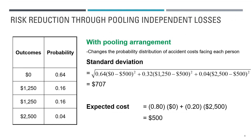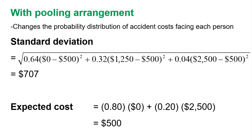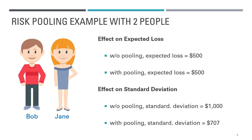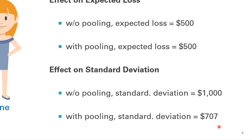Because the pooling arrangement reduces the probabilities of extreme outcomes, the standard deviation of accident costs paid by Bob and Jane is reduced. Without pooling, the standard deviation was $1,000. With pooling, the standard deviation of accident costs declines to $707. In summary, the pooling arrangement does not change a person's expected cost, but it reduces the standard deviation of costs — in this case, from $1,000 to $707.